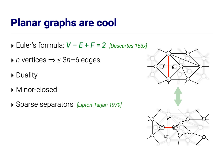Immediate consequence of Euler's formula is that planar graphs are sparse. If I've got n vertices in my planar graph, then it has at most three n minus six edges.